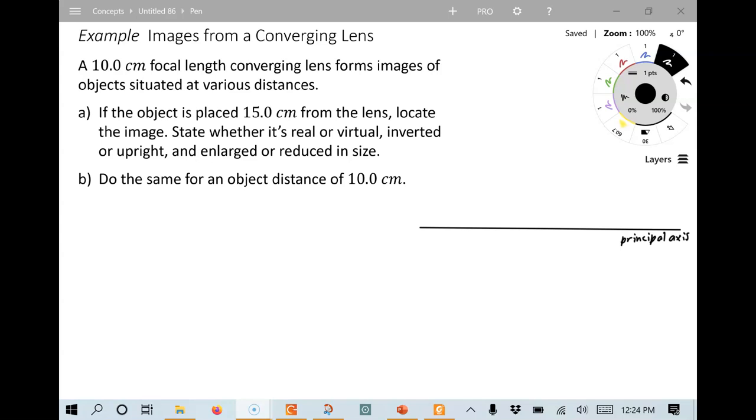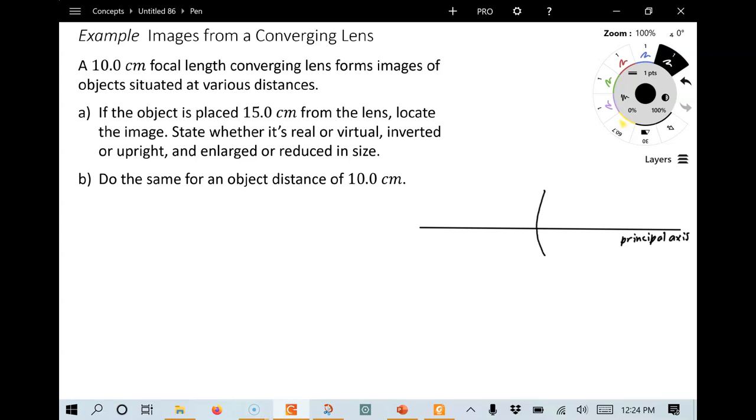Alright, so we're going to have a converging lens with a 10 centimeter focal length. To understand and visualize all the different locations of things, I like to always draw a picture of it. So I've already put a principal axis there, and a converging lens is one that has this shape. So let me go ahead and draw that. So there's the shape of our converging lens.